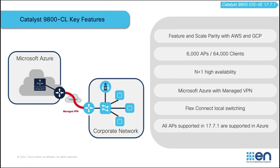N plus one high availability is supported and APs are in FlexConnect with local switching. In addition to that, all APs supported in 17.7.1 are supported with Catalyst 1900 CL on Microsoft Azure, including the newest Catalyst 9136 Wi-Fi 6E AP.